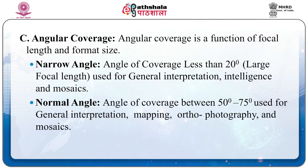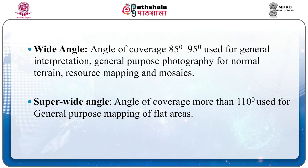Angular coverage is a function of focal length and format size. 1. Narrow angle — angle of coverage less than 20°, used for general interpretation, intelligence, and mosaics. 2. Normal angle — angle of coverage between 50° to 70°, used for general interpretation, mapping, orthophotography, and mosaics. 3. Wide angle — angle of coverage 85° to 95°, used for general interpretation, general purpose photography for normal terrain, resource mapping, and mosaics. 4. Super wide angle — angle of coverage more than 110°, used for general purposes of mapping of flat areas.